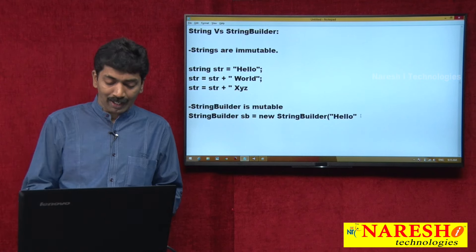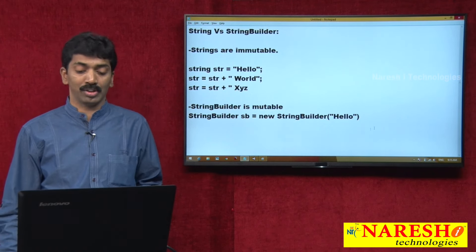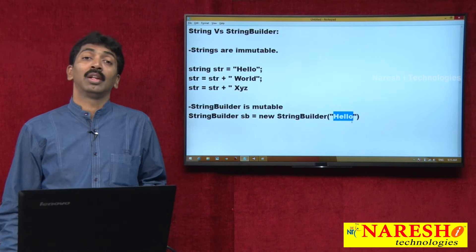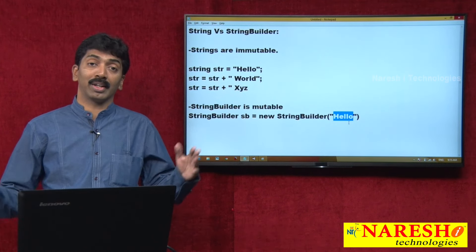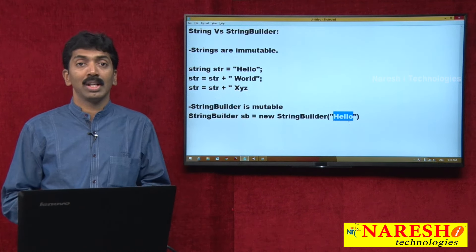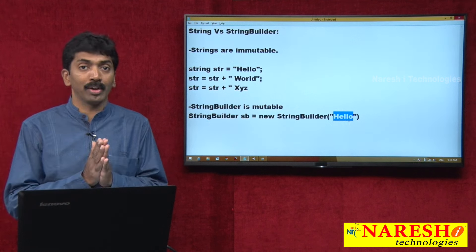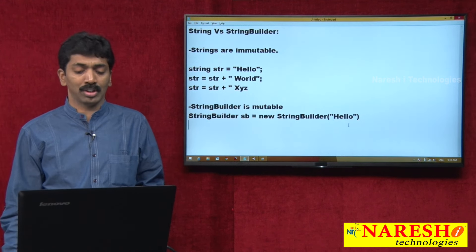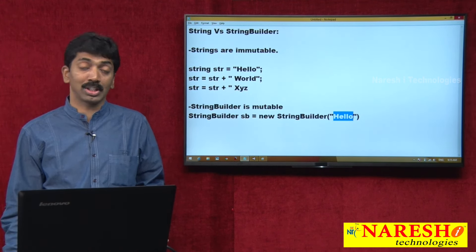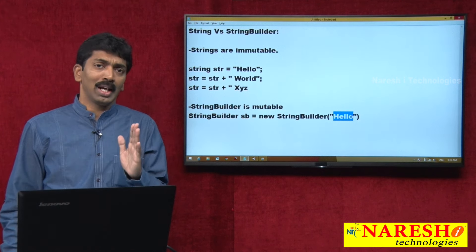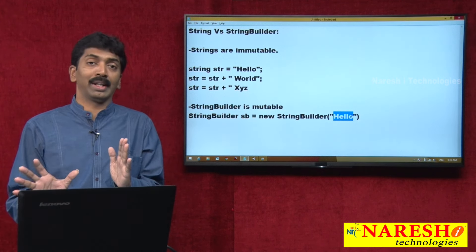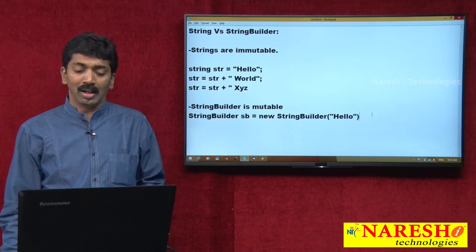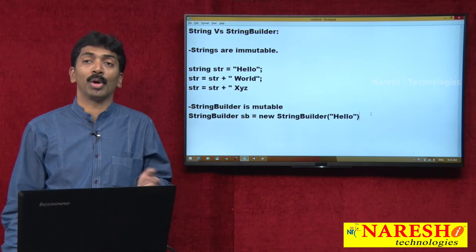We are giving 5 characters here. Even though you give 5 characters, internally it allocates memory for 16 characters. 16 characters of memory will be allocated for you. But actually we are giving only 5 characters of value — so 16 characters of memory is allocated, "hello" is the value, and the remaining 11 characters are left empty.